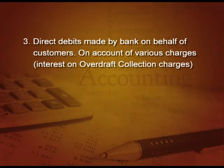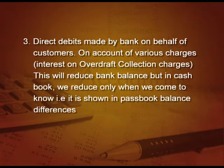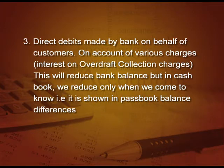Third point: there is a direct debit made by the bank on behalf of customers — sometimes on account of various charges like interest on overdraft, collection charges when a bill is collected, etc. This will reduce the bank balance in the pass book, but in the cash book we reduce it only when we come to know it is shown in the pass book. Till then the balance will differ — this is also timing difference.